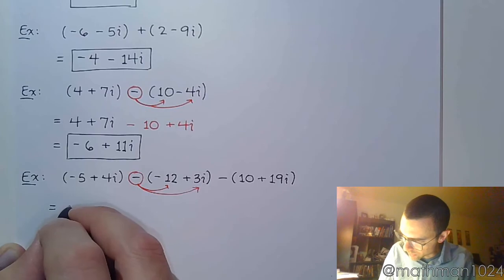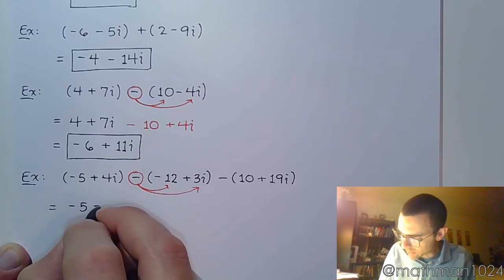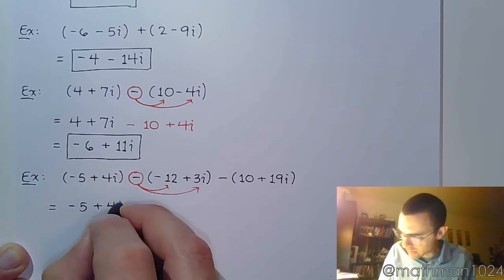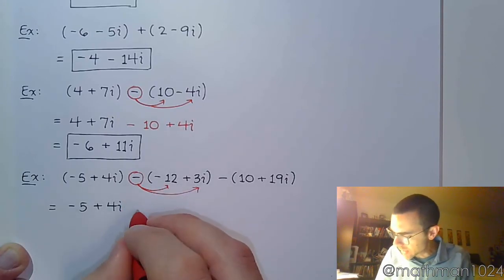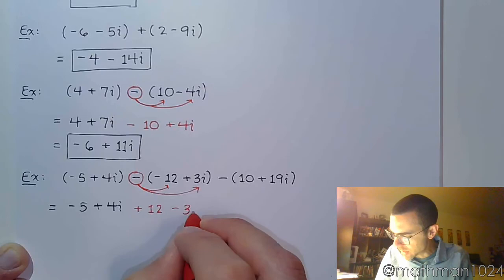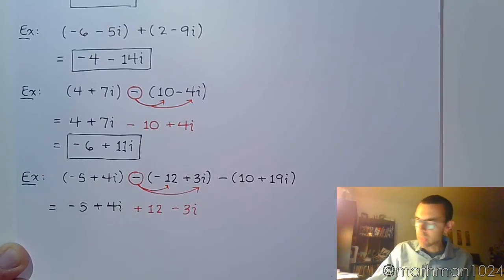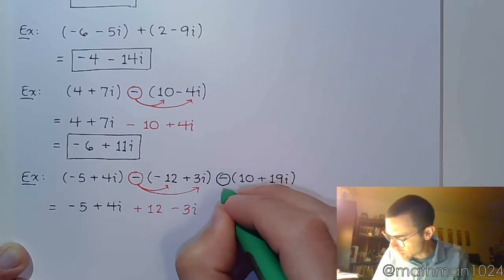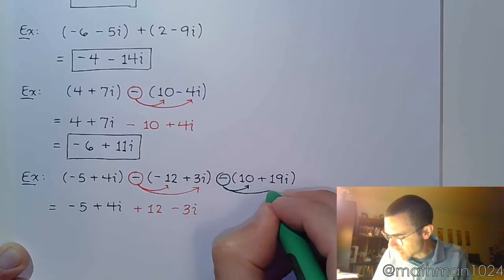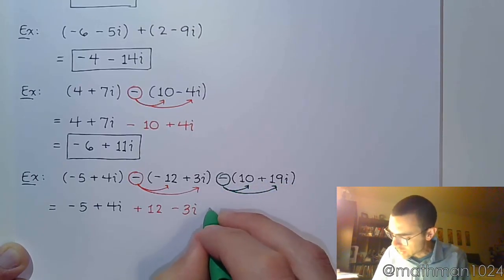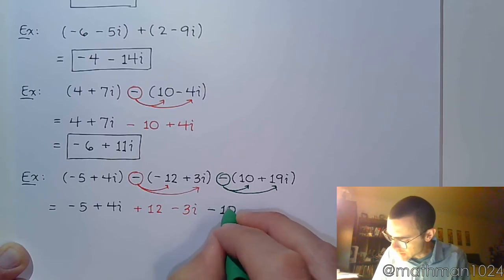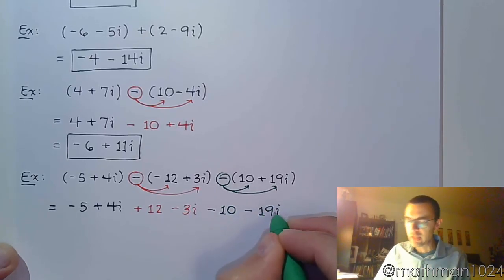All right, so I'm just going to rewrite this stuff without the parentheses. So negative 5 plus 4i, distributing the negative, that becomes positive 12 minus 3i. And then let's use green here to distribute this last negative, and that gives me negative 10 and minus 19i.